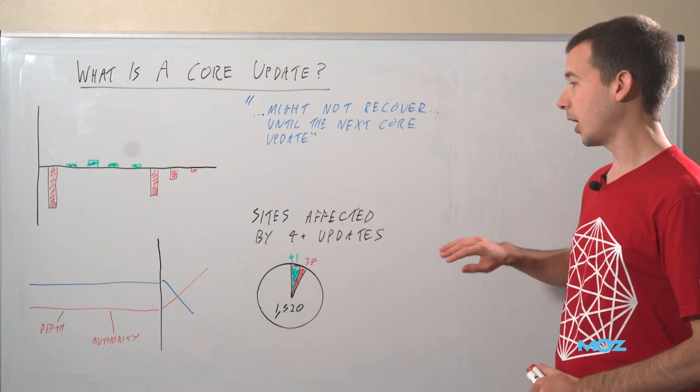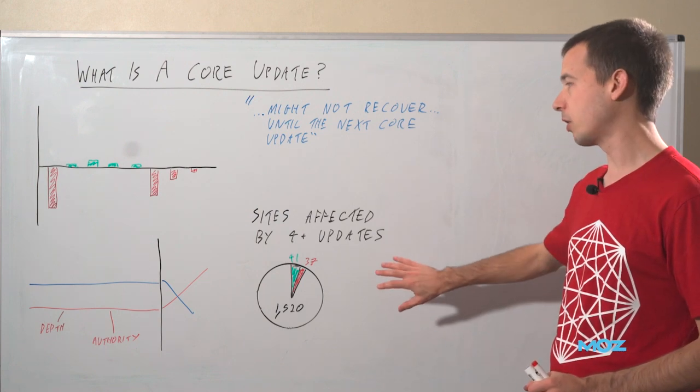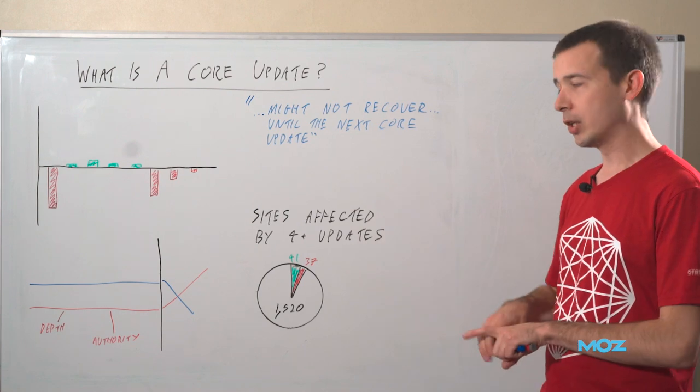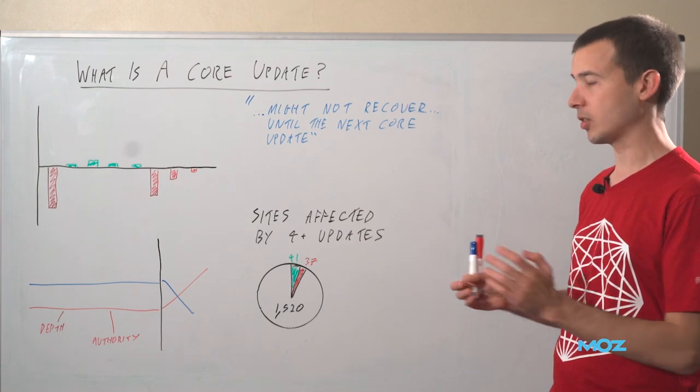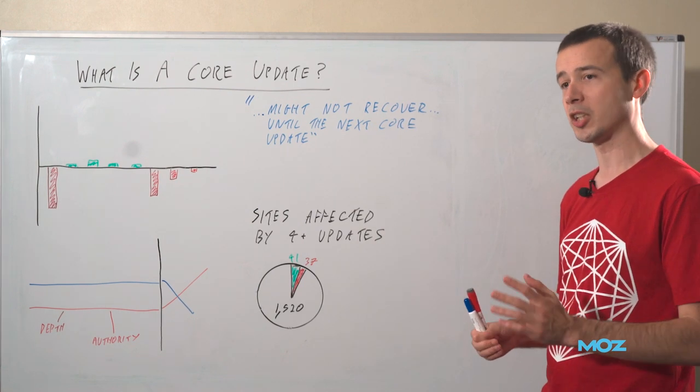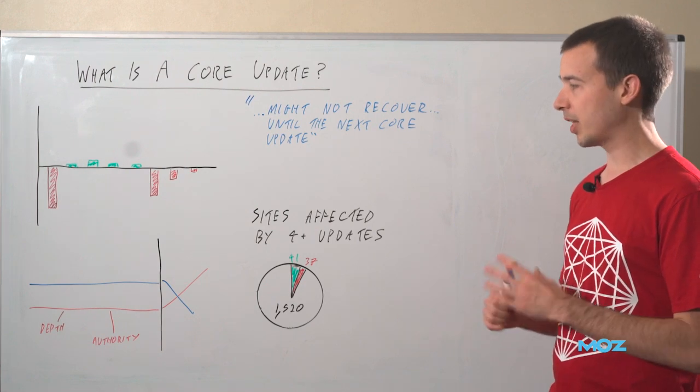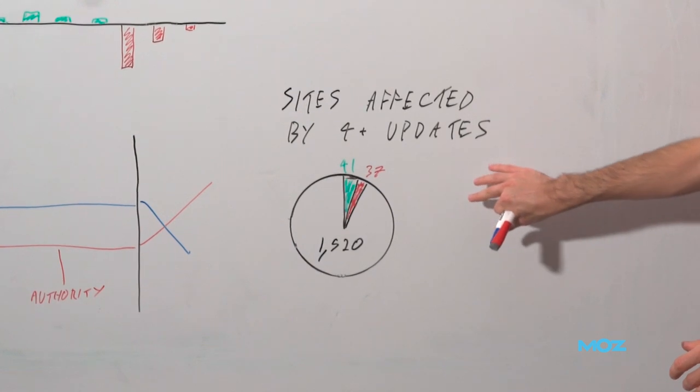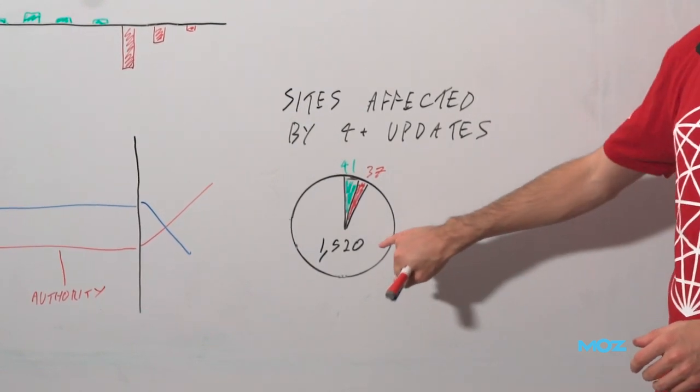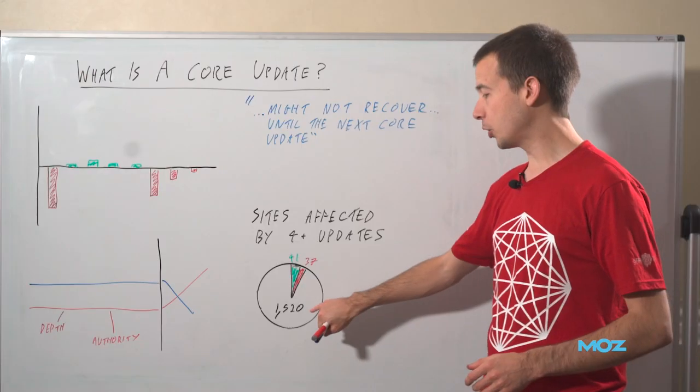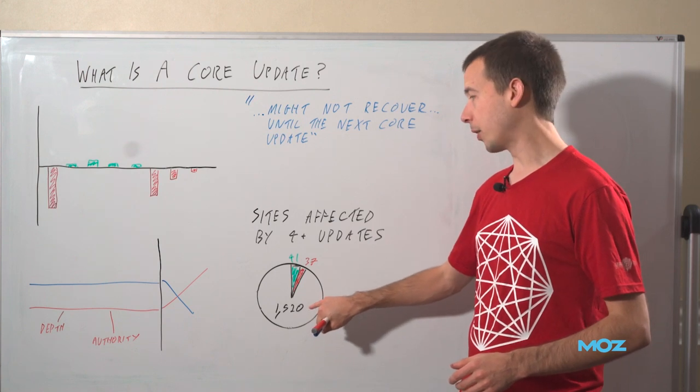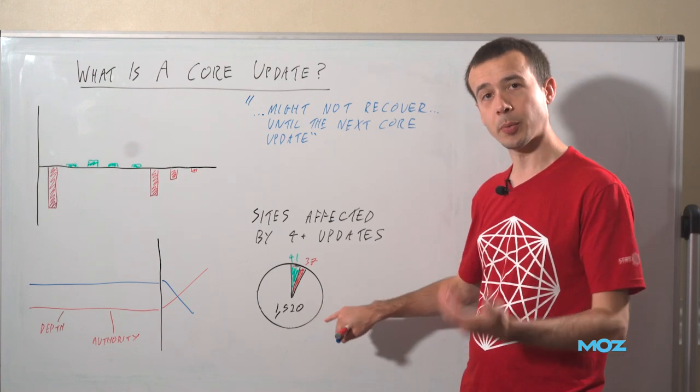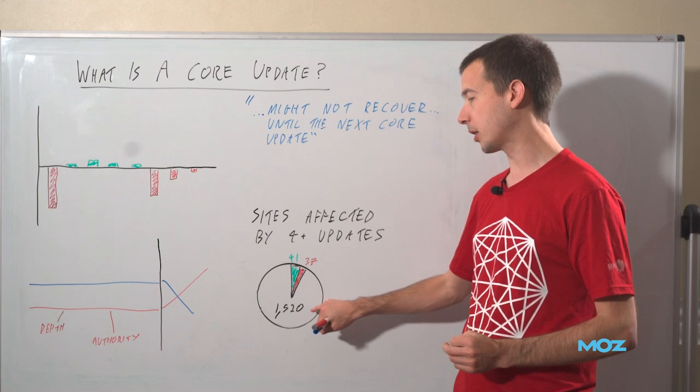And indeed, if we look at MozCast data, if we look at sites that were affected by at least four updates, so this is looking over the last, since Medic. Technically, there were some core updates before Medic, but I think the industry has been very focused on this since Medic. If we look at the core updates, of which there have been 12 now, and the sites were affected by at least four of them, the vast majority in MozCast data had both some positive, some major positive movements, and some major negative movements.